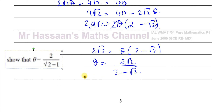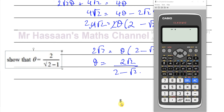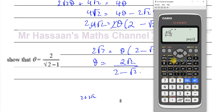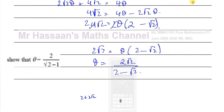To be sure we're on the right track, I'll use the calculator to check both expressions give the same value. Entering 2√2/(2 − √2) gives 2 + 2√2. Then entering 2/(√2 − 1) also gives exactly 2 + 2√2. So I know what I've found so far is correct — both expressions have the same value — and now I need to manipulate one into the other.